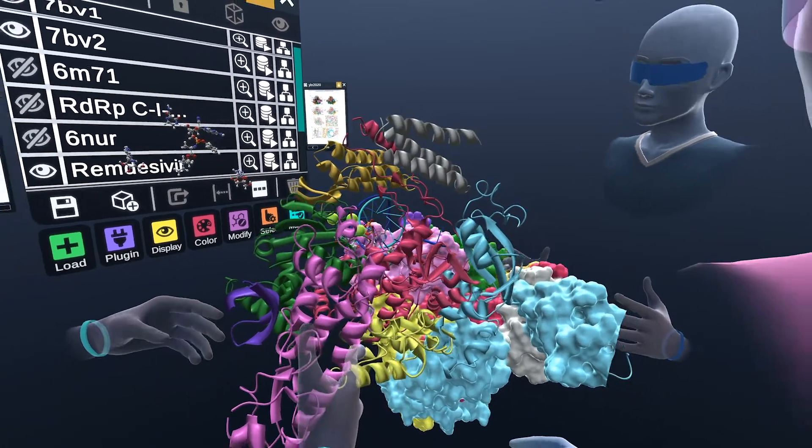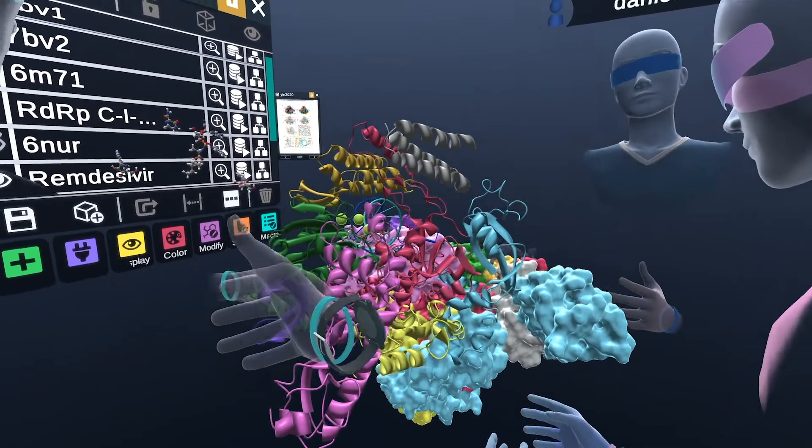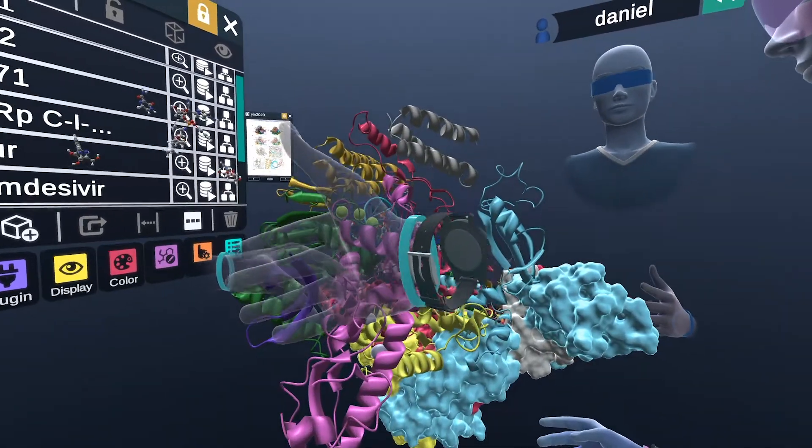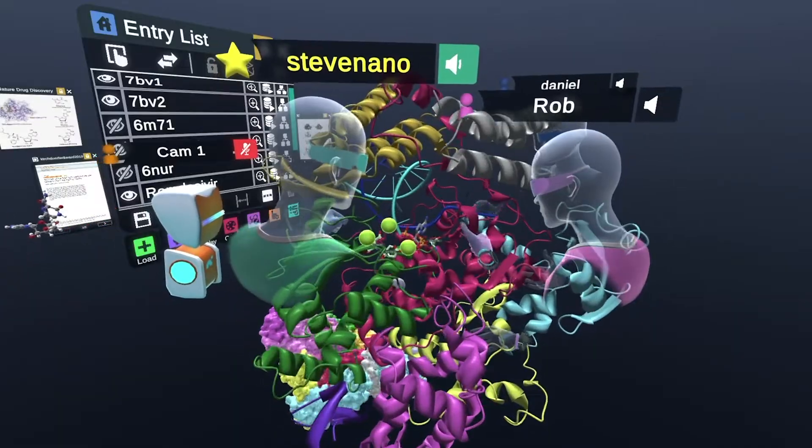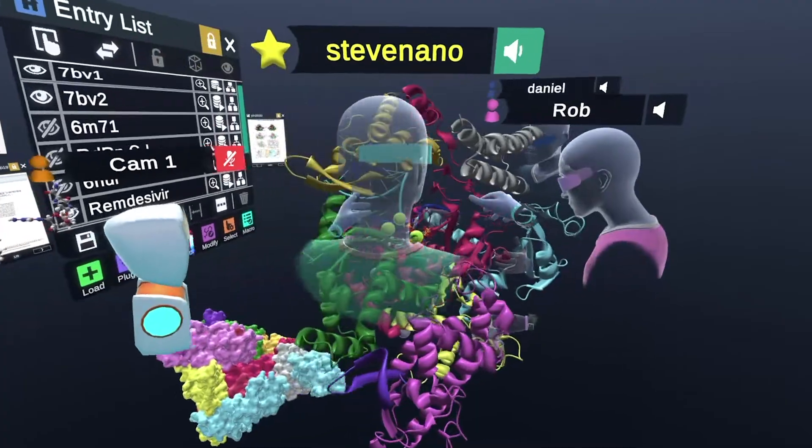Actually, almost a third of the targets are RNA polymerases for antiviral drugs. And so this is our main active site here. Do you guys want to share a little bit more about what's going on?